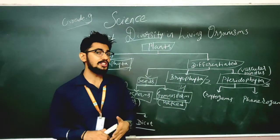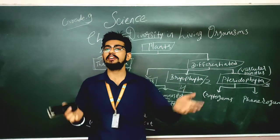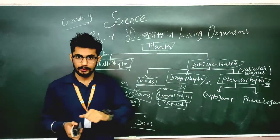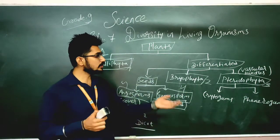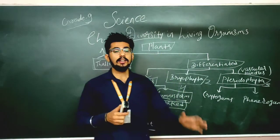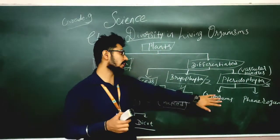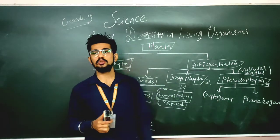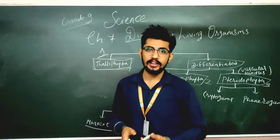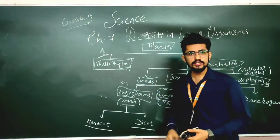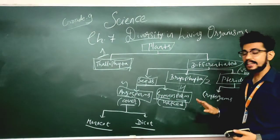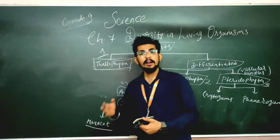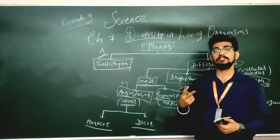After Thallophyta, we got Bryophyta because of differentiation — they have root-like and shoot-like structures but no vascular bundles. Then we got Pteridophyta, in which vascular bundles are present. Because of the vascular bundles, Pteridophyta had two more divisions based on hidden and exposed reproductive organs — Cryptogams and Phanerogams. The last divisions, based on seeds, are Gymnosperm, which has naked seeds, and Angiosperm, which has covered seeds. Angiosperms are also known as flowering plants and produce fruits, with seeds divided into monocot and dicot.